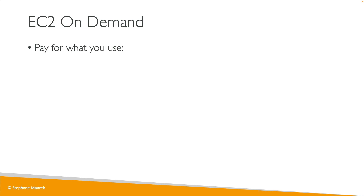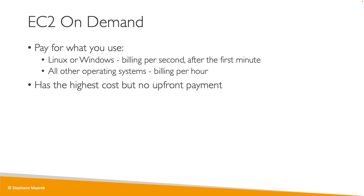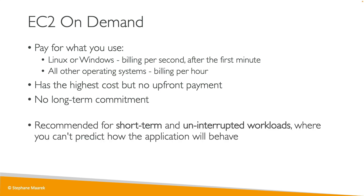Now let's look at EC2 on-demand. You pay for what you use — for Linux or Windows, you get billing per second after the first minute; for all other operating systems, billing is per hour. It has the highest cost but no upfront payments and no long-term commitments, making it recommended for short-term and uninterrupted workloads where you can't predict how the application will behave.